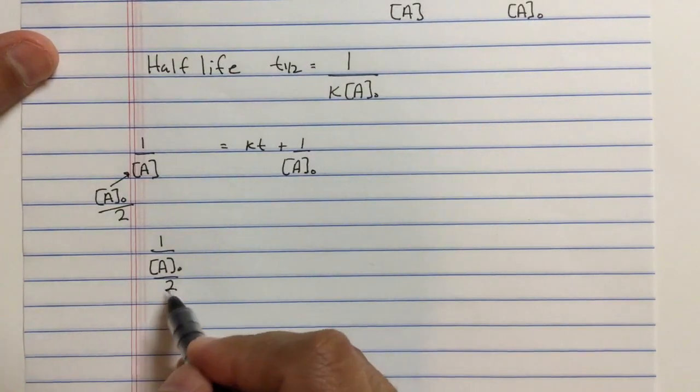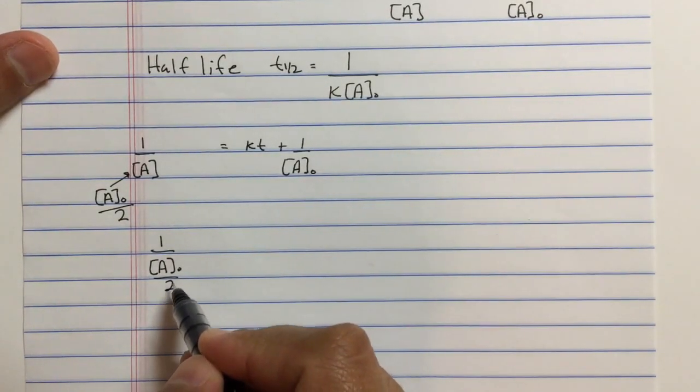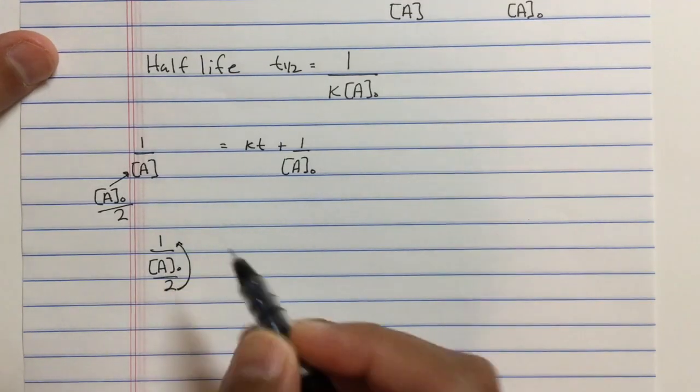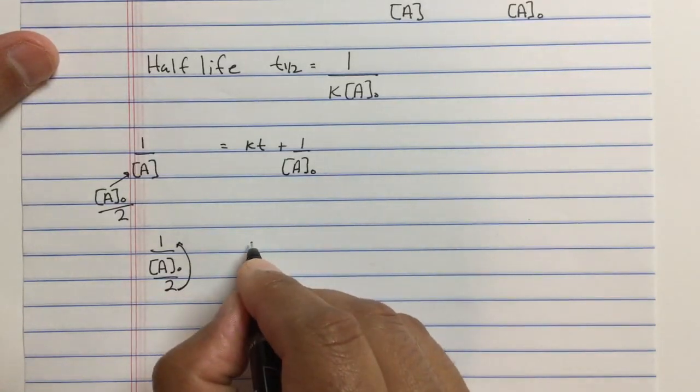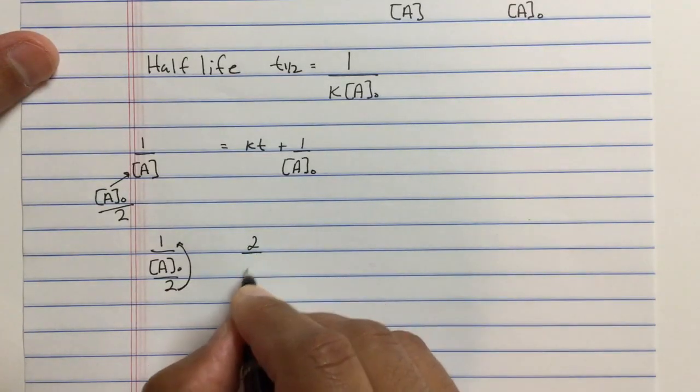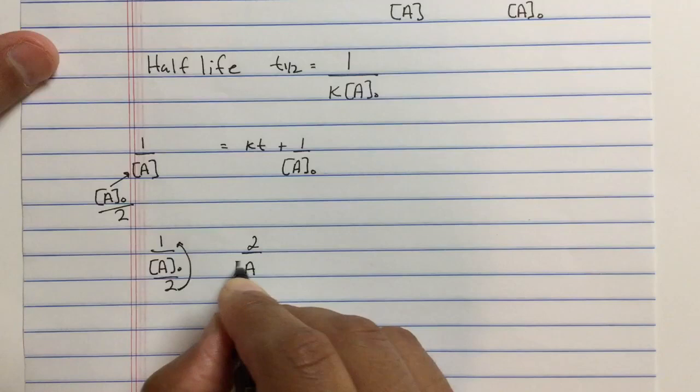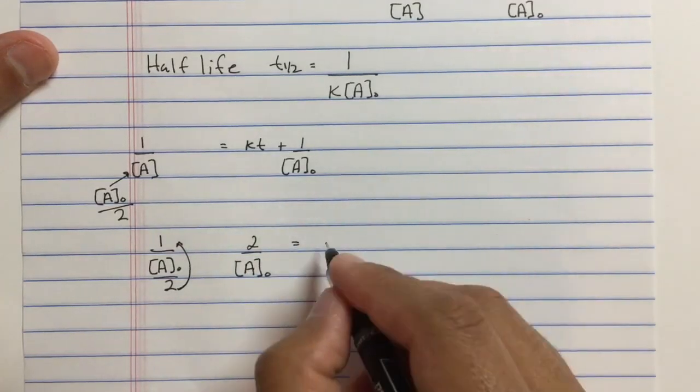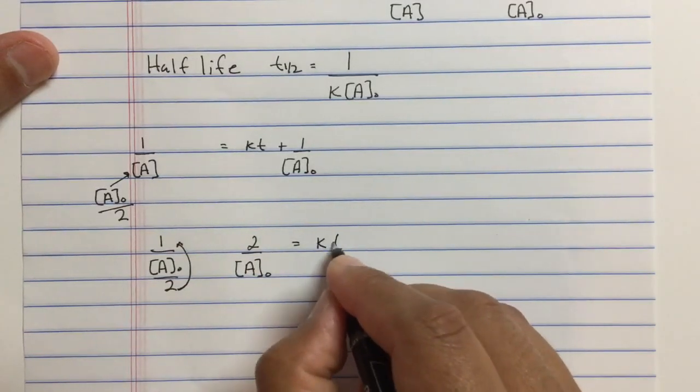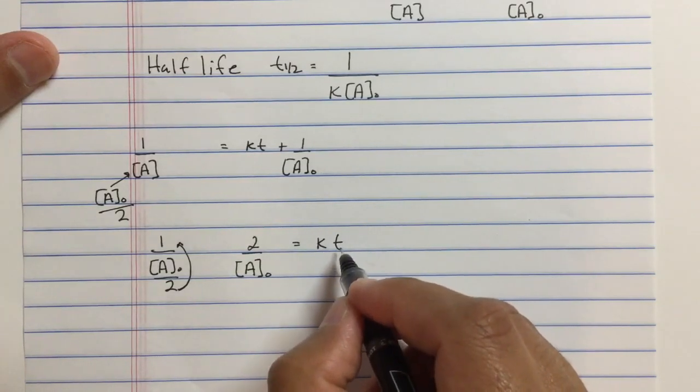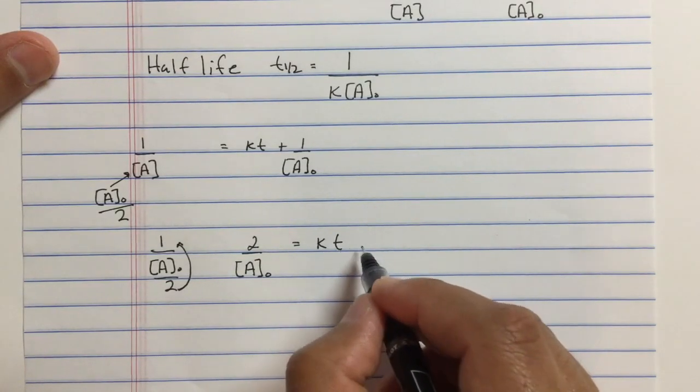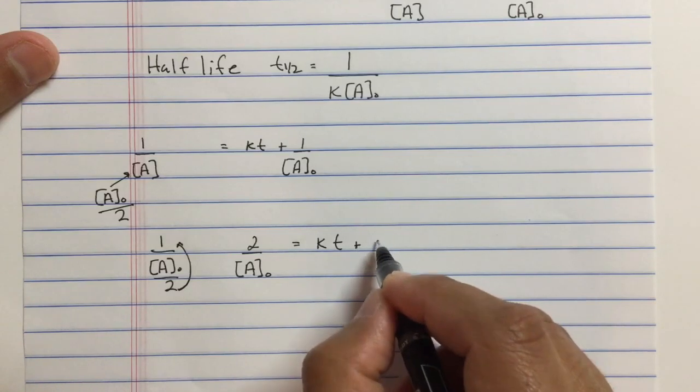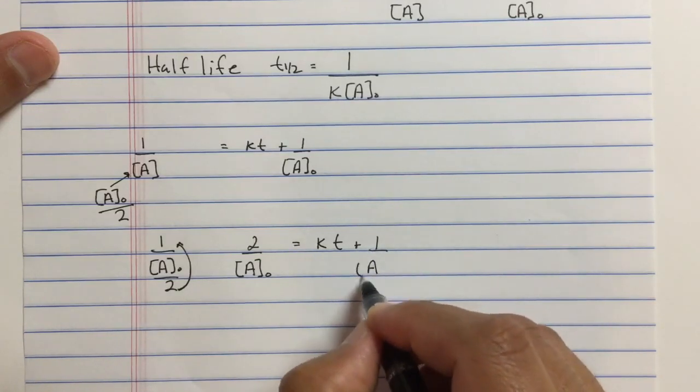If we rewrite this equation, 1 over [A]₀ over 2. Remember, you've got that denominator inside a denominator. When that happens, this denominator goes up to the top. Let me rewrite that right here. This becomes 2 over [A]₀ equals k times t, which is the half-life, plus 1 over [A]₀.